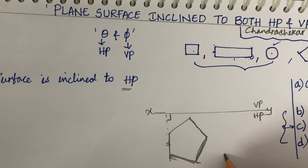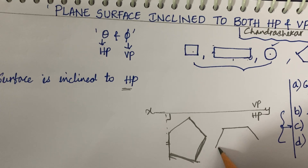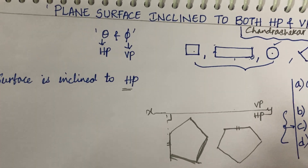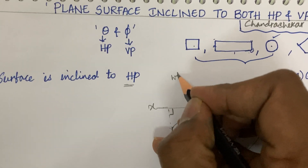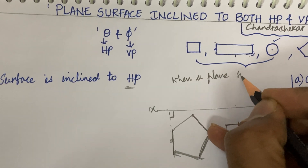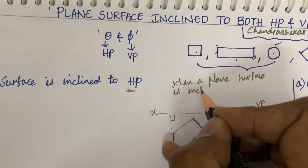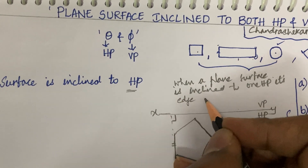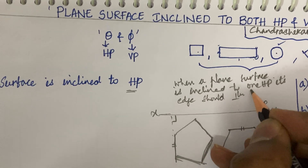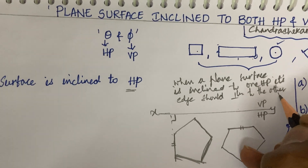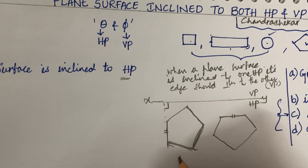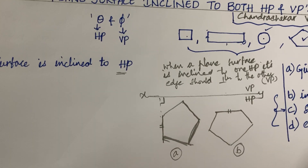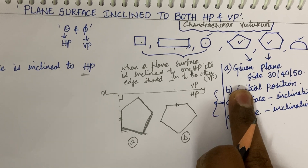Students may get confused — can I draw the pentagon like this? This is incorrect. If you look here, the pentagon has only one straight edge. In this incorrect position, the straight edge is parallel to VP. But the condition is that when a plane's surface is inclined to one plane, one of its edges should be perpendicular to the other plane — perpendicular to VP. This is condition A and this is condition B, where students get confused drawing the first step. If your first step is incorrect, the entire three-step problem goes wrong.